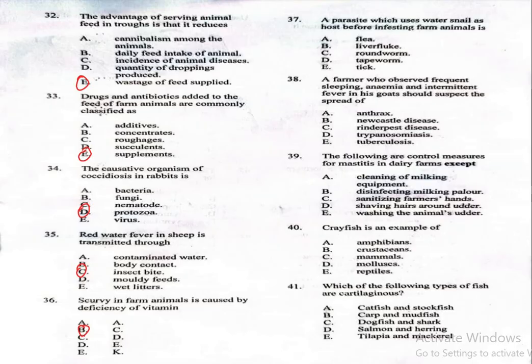Question 37: A parasite which uses water snail as host before infesting farm animals is A, fluke; B, liver fluke; C, roundworm; D, tapeworm; E, tip. The correct answer for question 37 is B, liver fluke.